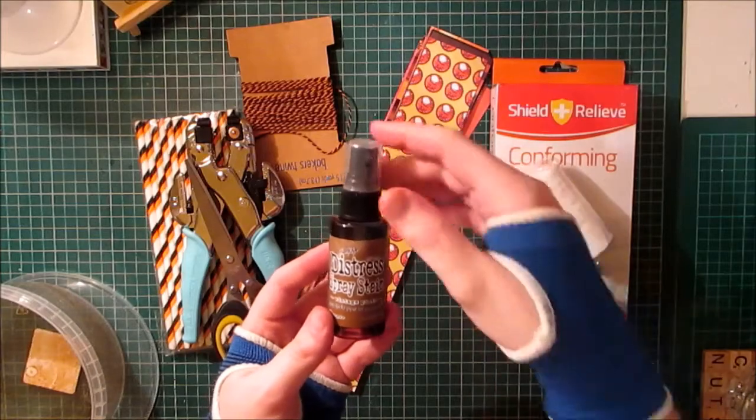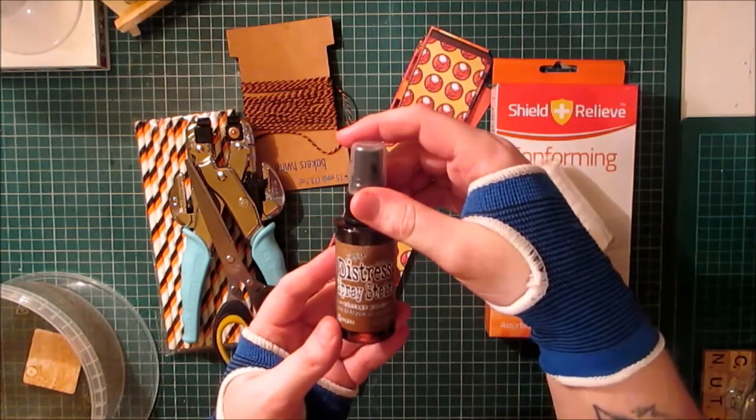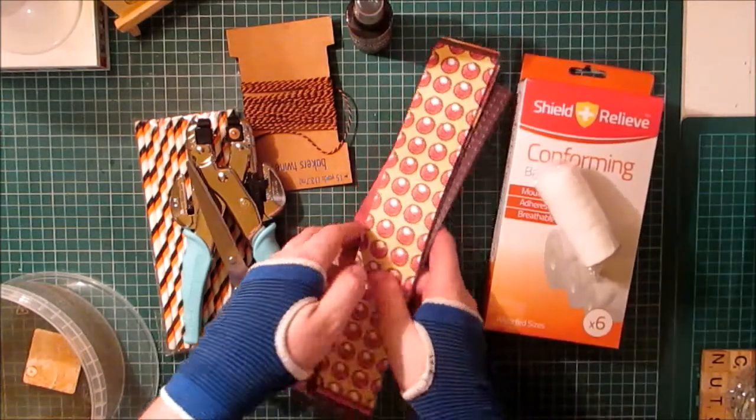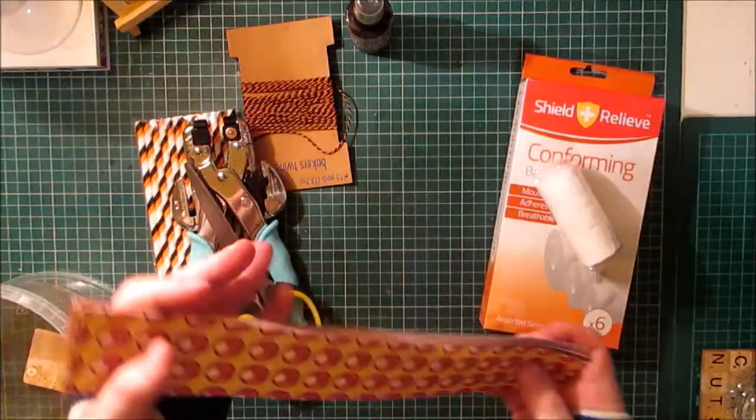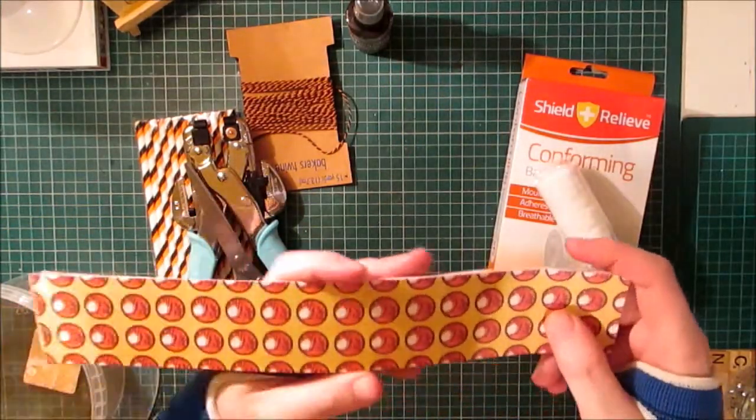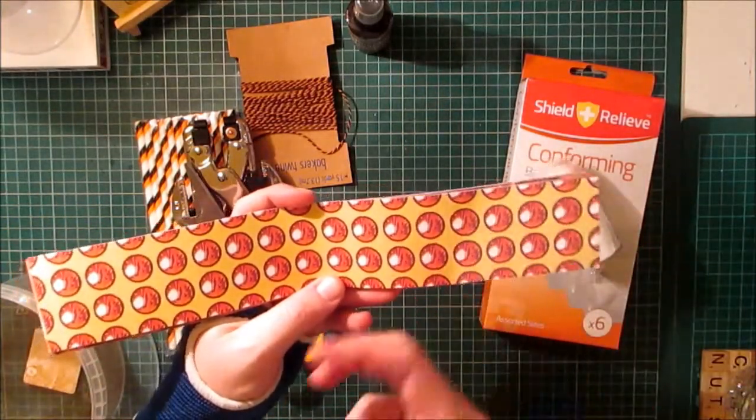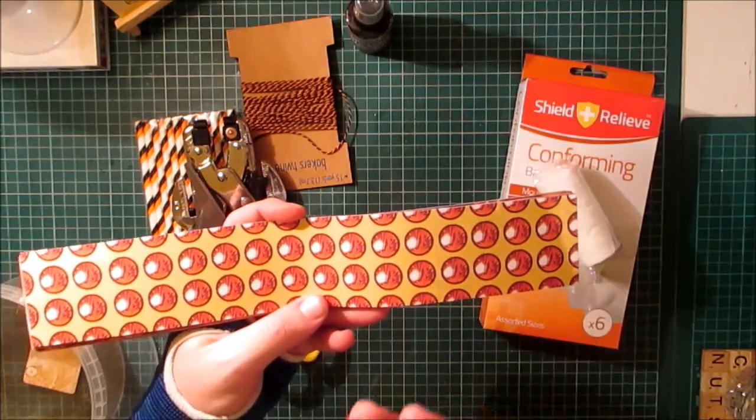Some Tim Holtz distress spray stain in vintage photo. I'm going to be using some of these 12 by 2 inch designer papers. If you don't have these, you can use any of your cardstock or papers and just cut them to size.